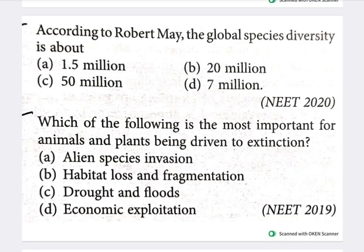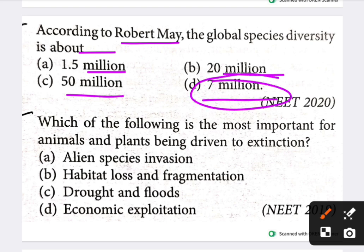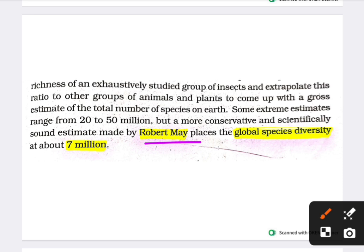Next question: according to Robert May, the global species diversity is about how many? Options include 1.5 million, 20 million, 50 million, and 7 million. The answer is 7 million. Robert May places the global species diversity at about 7 million. This NCERT line has been used to generate this question.